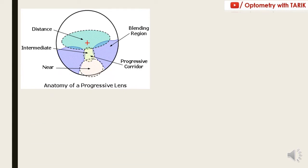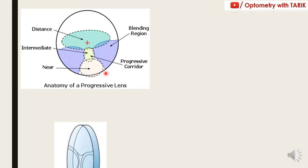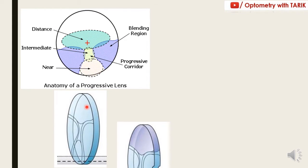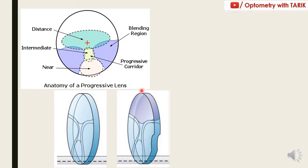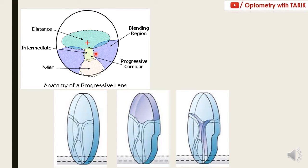The anatomy of a progressive lens: here is a typical progressive addition lens cross-section. The first zone is the distance power — for example, in a Plano addition 2, this complete area has Plano power or whatever distance power is to be incorporated. The second zone is the corridor or intermediate vision zone. The progressive corridor is the junction between distance and near, and this zone has a continuous progression in power on the plus side.